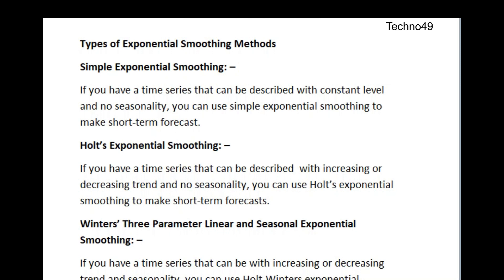The second one is Holt's Exponential Smoothing. If you have a time series that can be described with an increasing or decreasing trend but no seasonality, we can use Holt's Exponential Smoothing. It is quite different from Simple Exponential Smoothing. Generally, with the help of past historical data you can see that the data is increasing or decreasing at a very constant level with no seasonality, so you can use Holt's Exponential Smoothing.